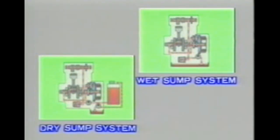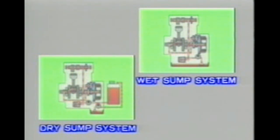Now let's look at the lubrication system for the four-stroke engine. Suzuki four-stroke engines use systems in which oil is stored in the crankcase, and systems in which oil is stored separately in an oil tank. The first type is referred to as the wet sump system, and the second type is the dry sump system. Most Suzuki four-stroke engines use the wet sump system.